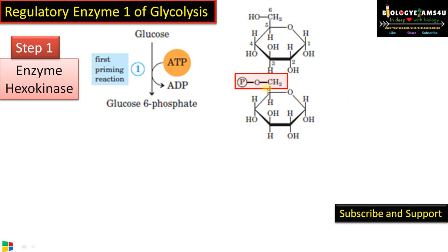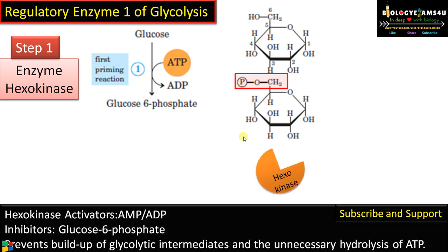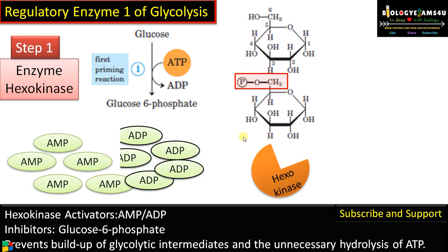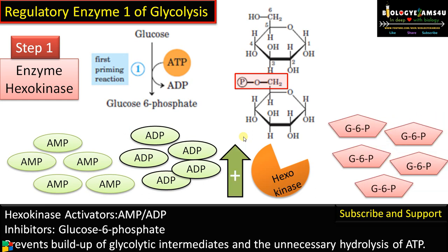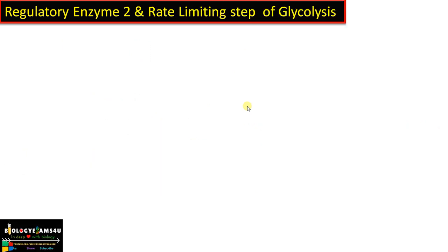We have a detailed video on the 10 steps of glycolysis you can refer to for more. Hexokinase is activated by AMP and ADP, indicating low energy levels inside the cell, whereas it is inhibited by glucose 6-phosphate — the product itself — a kind of feedback inhibition. In this step ATP is utilized, so unnecessary loss of ATP can be prevented by blocking the pathway using the product itself.